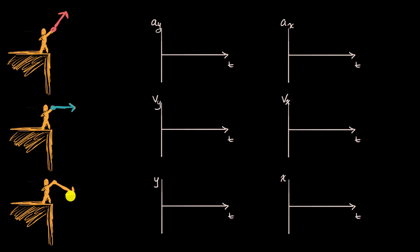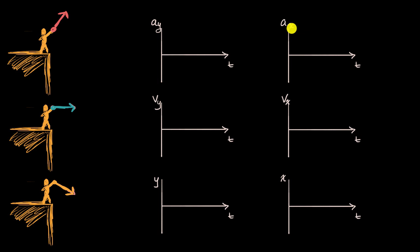What we're going to do in this video is think about, for each of these initial velocity vectors, what would the acceleration versus time, the velocity versus time, and the position versus time graphs look like in both the y and the x directions? I encourage you to pause and think about it on your own before I work through it. Let's first think about acceleration in the vertical dimension, acceleration in the y direction.